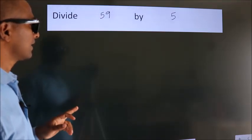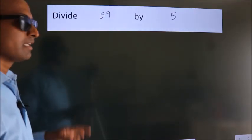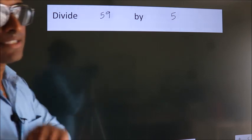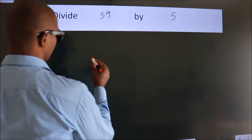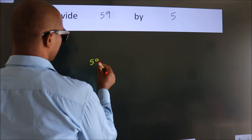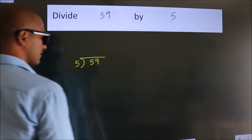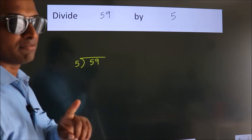Divide 59 by 5. To do this division, we should frame it in this way: 59 here, 5 here. This is your step 1.